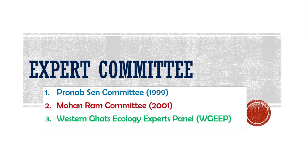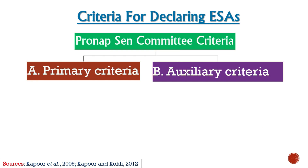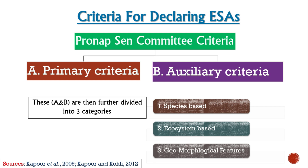This assignment is under the supervision of Mahadev Gadgil. Next, we will see what are the criteria assigned by the Pronab Sen Committee for declaring an area as an eco-sensitive area. The committee's criteria are divided into the primary criteria and the auxiliary criteria, which have been further categorized into three main categories. The first criteria is species-based, the second is ecosystem-based, and the third is geomorphological features.